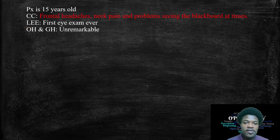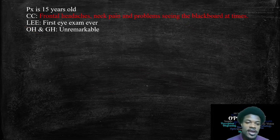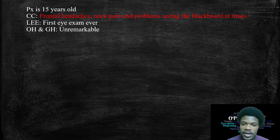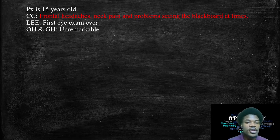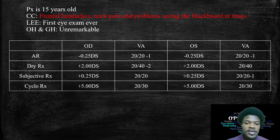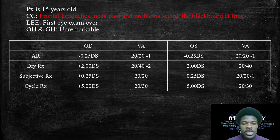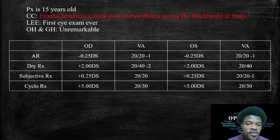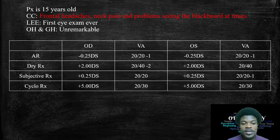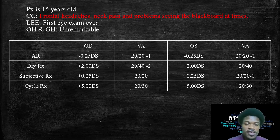Let's jump into a case. The patient is 15 years old, with chief complaints of frontal headaches, neck pain, and problems seeing the blackboard. This is their first eye exam ever, and ocular and general health history is unremarkable. The autorefractor gives minus 0.25 in both eyes. Dry retinoscopy gives around plus two, with VA around 20/40. On subjective refraction, they only accept plus 0.25 in both eyes giving 20/20. Cycloplegic refraction gives plus five with around 20/30 vision.